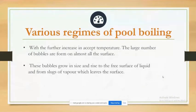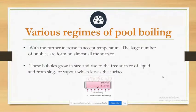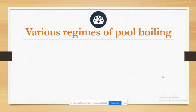With a further increase in excess temperature, a large number of bubbles are formed on all the surface. These bubbles grow in size and rise to the free surface of the liquid, forming slugs of vapor which leave the surface. I end my part here; now my friend Jesh will explain further.